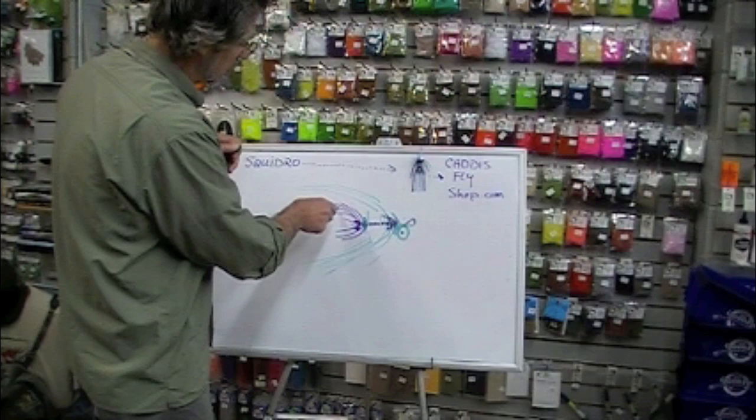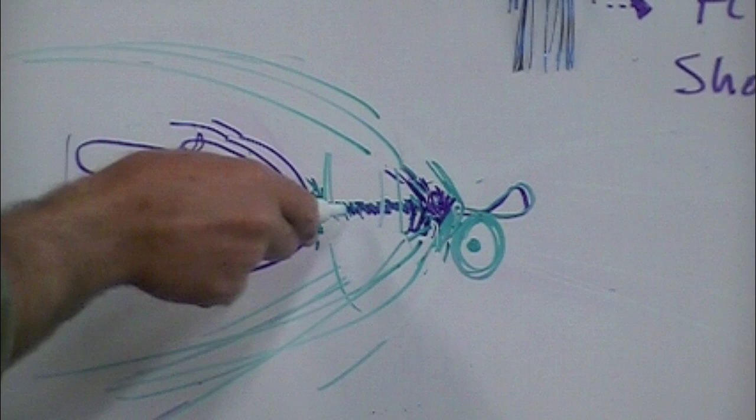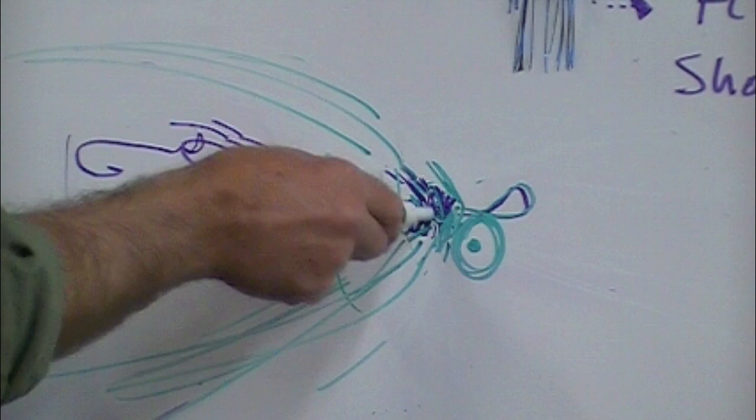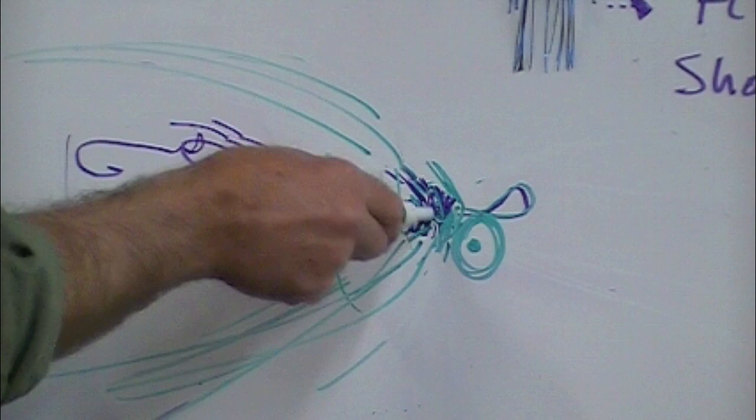And here you have the basic parts of your squid row: stinger hook, loop, butt section, rubber legs in the rear, another piece of dubbing, silver or gold tinsel body, a wad of dubbing there covers up the rubber legs. Remember these are tied forward initially, they're folded back, they stand out. More dubbing, dumbbell eye, tie off in front and you're done. Anatomy of a squid row.